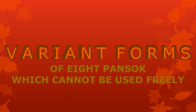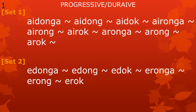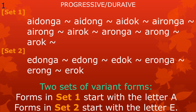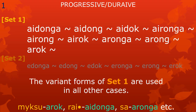Let's start with our list of variant forms of eight meaningful parts. Variant forms which cannot be used freely — as you may remember from the previous video — their forms depend on the meaningful part that comes before them in the word. The meaningful part we call progressive durative has many variant forms. They are divided into two sets: set one and set two. The variant forms in set one all start with the letter A, and the forms in set two all start with the letter E. The variant forms of set two may be used when the preceding meaningful part ends in a consonant followed by the vowel E. The forms in set one are used in all other cases, so when the preceding meaningful part does not end in E.